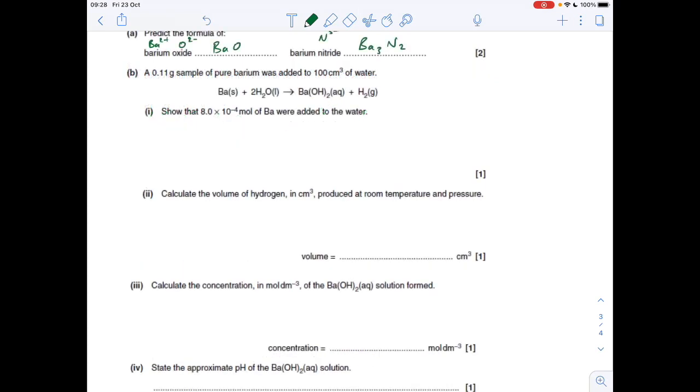So that's that one. Part B, we've just got to show that that many moles of barium are added to the water. So moles equals mass over MR. So that's 0.11 divided by 137.3. And that of course is going to give us the number we want. Eight times ten to the minus four.